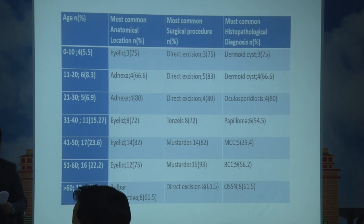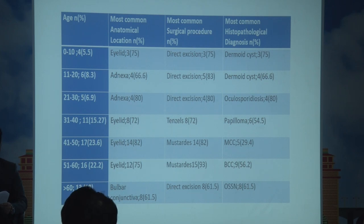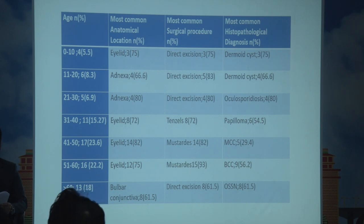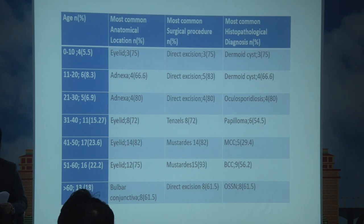In the 21 to 30 age group, it was adnexa; direct excision was done and oculosporidiosis was the commonest histopathological diagnosis. In the 31 to 40 age group, it was the eyelid; Tenzel flap was commonly done and papilloma was the commonest histopathological diagnosis. In the 41 to 50 age group, the eyelid was the common anatomical location and Mustardé was the surgical procedure mainly done.